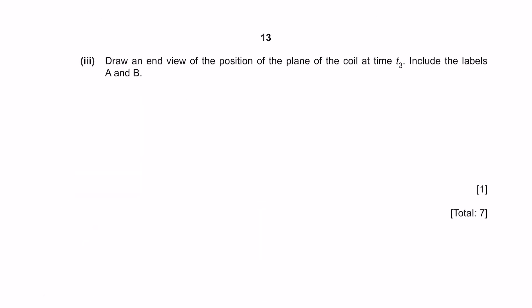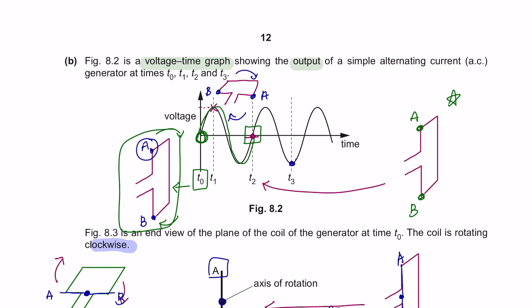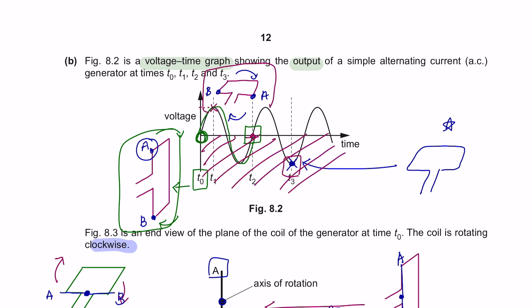Part 3. Draw an end view of the position of the plane of the coil at time T3. Include the labels of A and B. At time T3, the voltage is maximum. The coil must be at a horizontal position. This peak is on the negative region, meaning that it will be opposite from the positive peak. If it was B, A, it will be opposite right now. A over here and B over here.